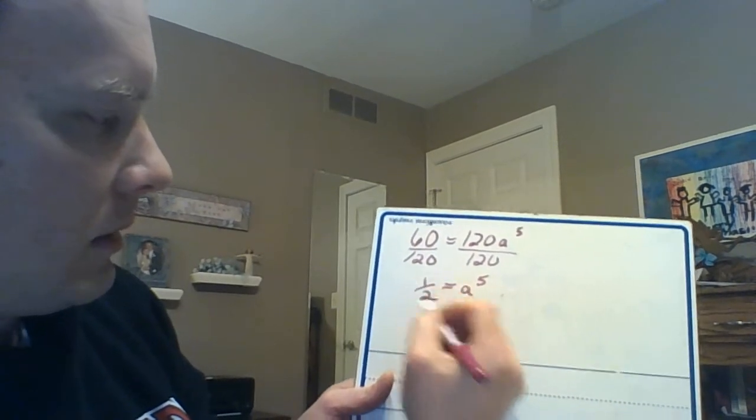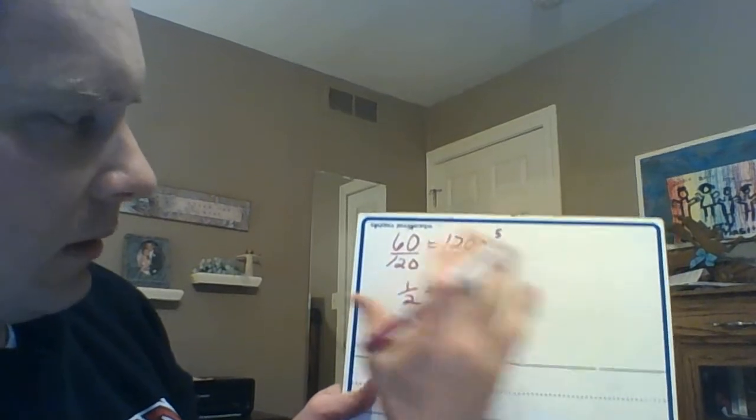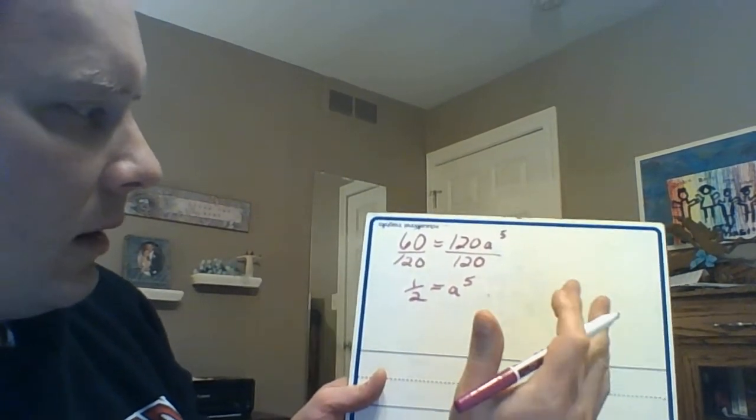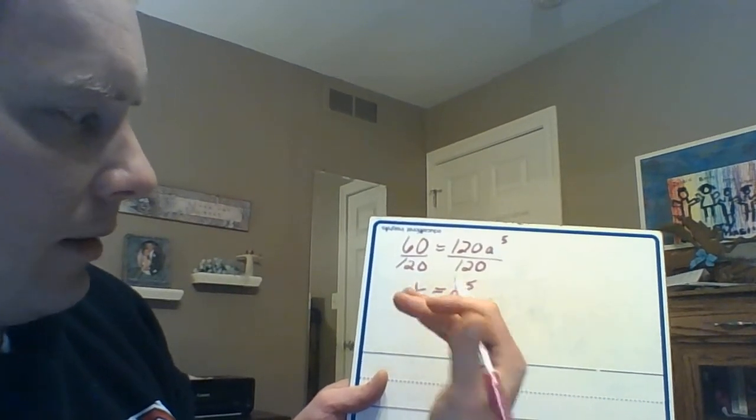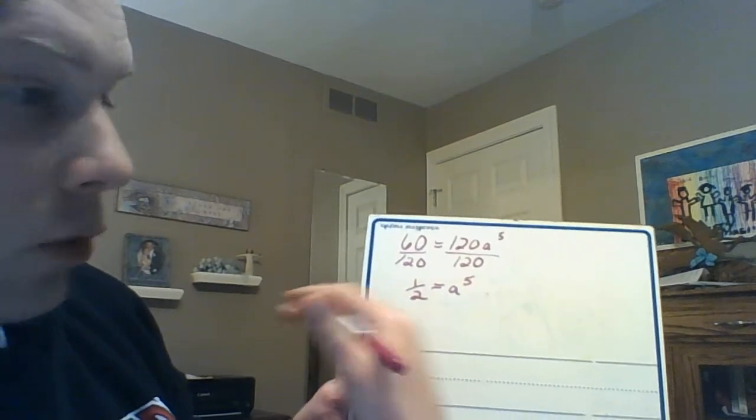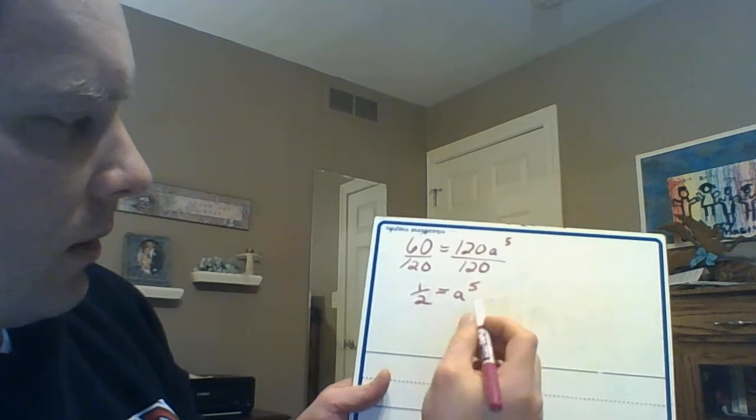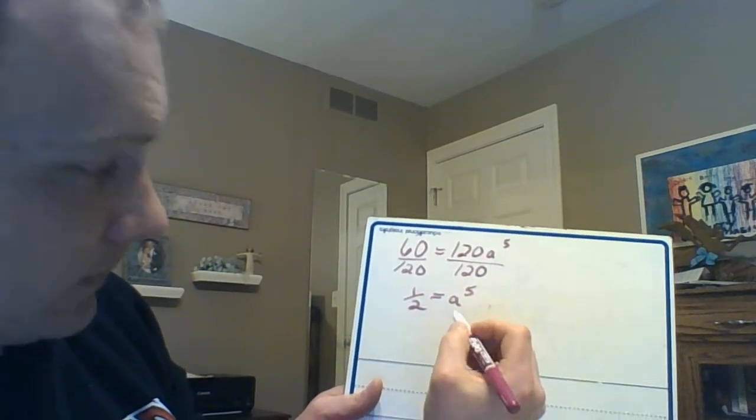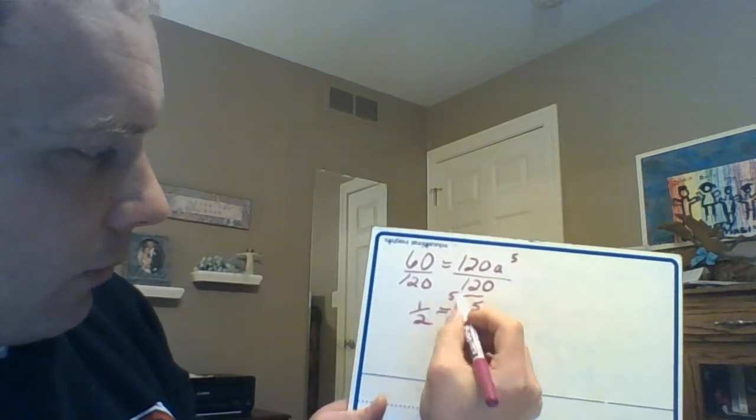That's that idea of a half-life, that's where that comes from. So this example that I'm going through will work for any problem where they give you a point on the graph and you have to find the exponential function. It doesn't only work with half-life ones, it would just give you a different value here. Anyways, we're at this point. To get a by itself, we would take the fifth root of that.